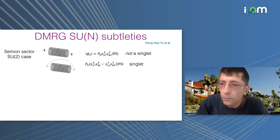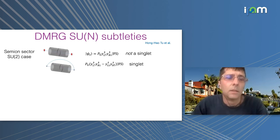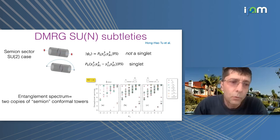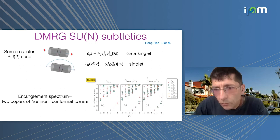A subtlety for experts: because we are using SU(N) DMRG — if you think about SU(2), you see the edge state would have spin-up and spin-down, but that's not a singlet. If you want the full symmetry you need to entangle these edge states, giving extra entanglement across the bond. When you cut the system in two you get some extra structure, giving two copies of the conformal towers. That's why in the middle panel, at the zero-energy bottom, you have both a singlet and an adjoint representation.